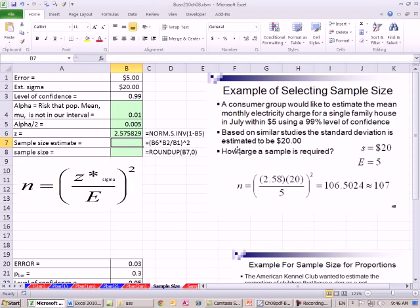Now we can calculate our estimate of sample size equals in parentheses, we'll take our z times our estimate of sigma divided by our error, close parentheses, and then caret 2. All of that has to be squared. 106.